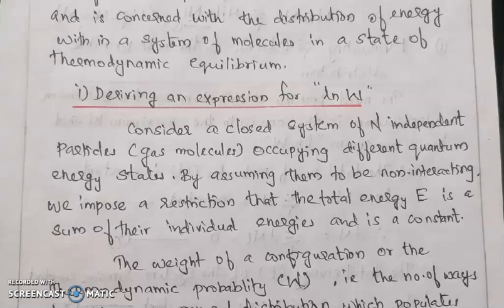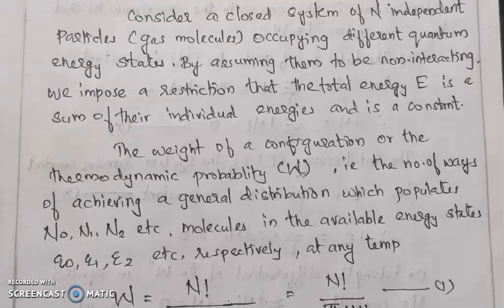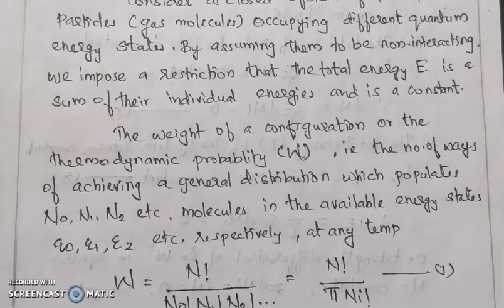The weight of a configuration is the thermodynamic probability W — that is, the number of ways of achieving a general distribution which populates N0, N1, N2, etc. molecules in the available energy states Epsilon 0, Epsilon 1, Epsilon 2, etc. respectively, at any temperature.